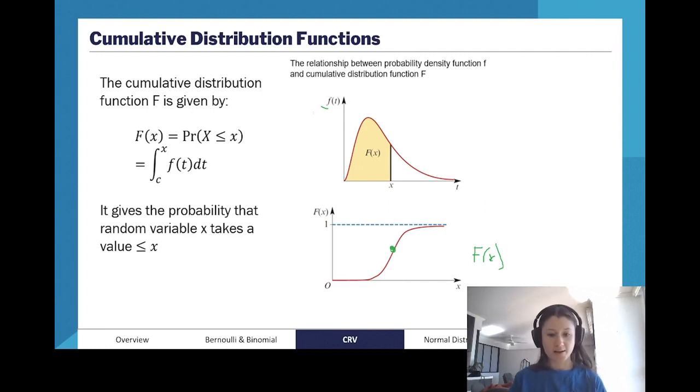So if we are finding the function of X at this value here, what you're finding is the probability that big X is less than that value.